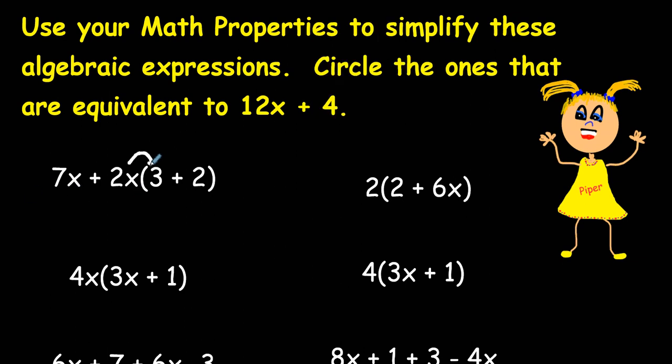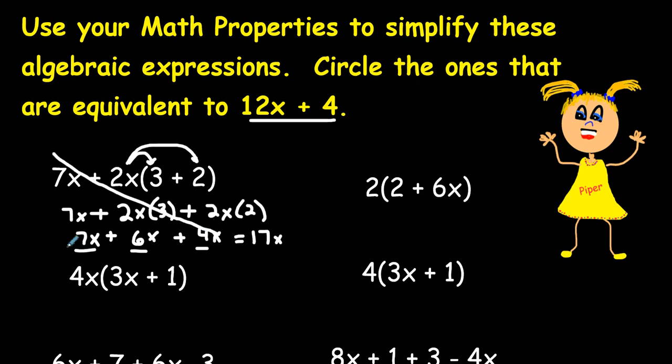First we have to distribute multiplication here. When we distribute multiplication 2x times 3 plus 2x times 2, 2 plus 7x. 2x times 3 is 6x, 2x times 2 is 4x and we get 7x here. Now all we have to do is add our coefficients 7 plus 6 plus 4 equals 17x when I simplify this. Notice that that does not equal 12x plus 4 so this is not equivalent.